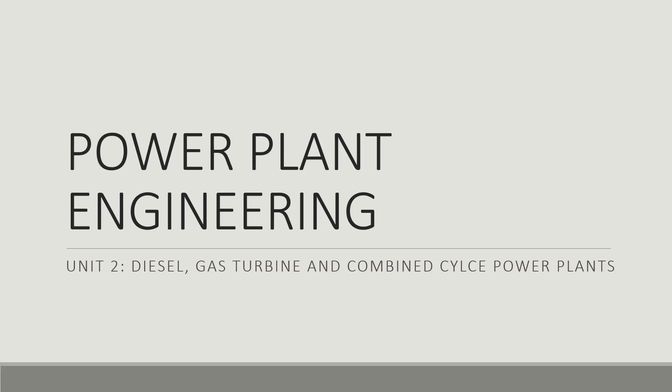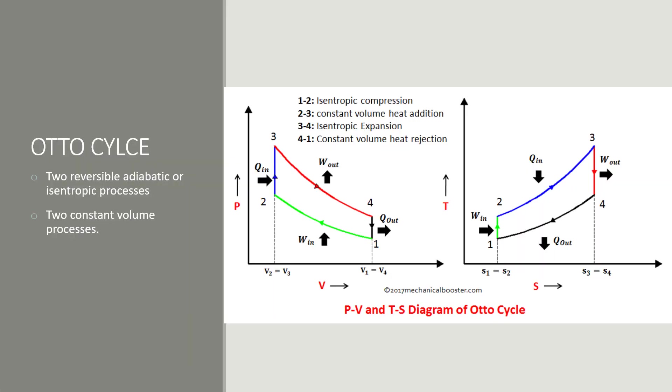Hello again, we were discussing about power plant engineering. Now we'll be discussing about Unit 2, that is diesel, gas turbine, and combined power. We'll be discussing about Otto cycles — Otto cycles are basically spark ignition cycles or petrol engines.